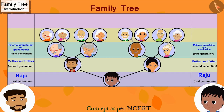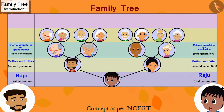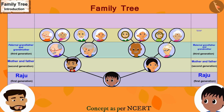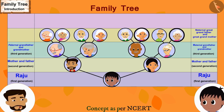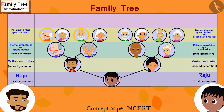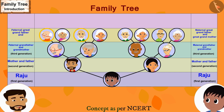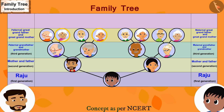Raju asks what his relationship is with all these people. His father explains that these are his maternal great grandfather and great grandmother, and the others are his paternal great grandfather and great grandmother. This makes up the fourth generation of the family tree.